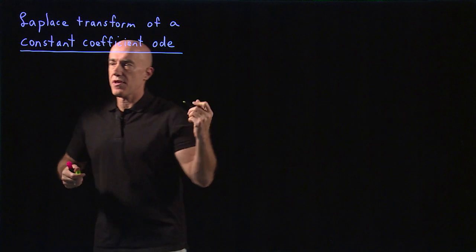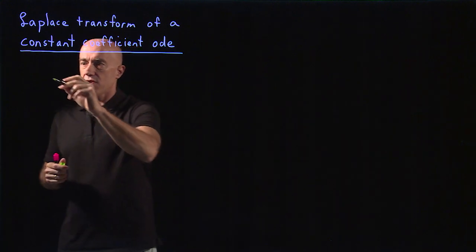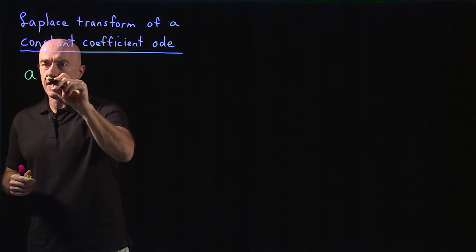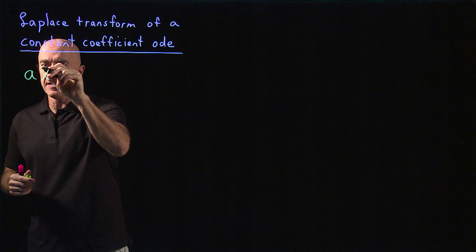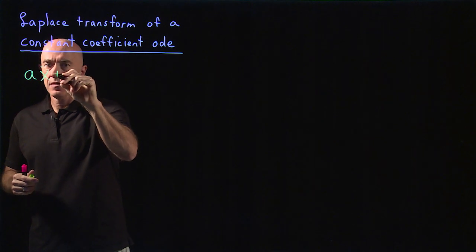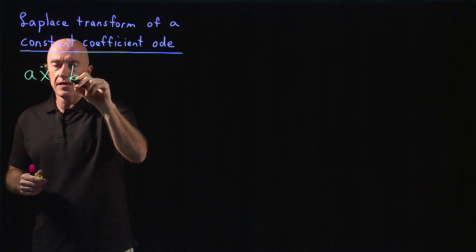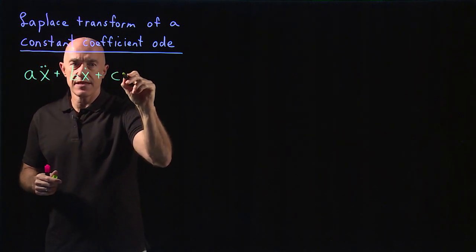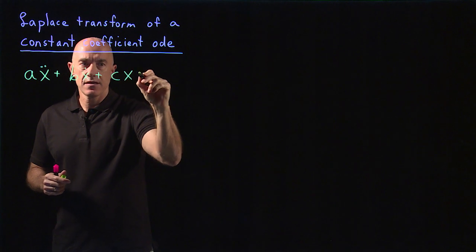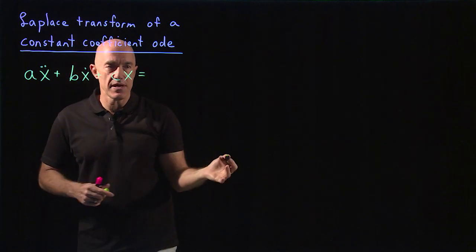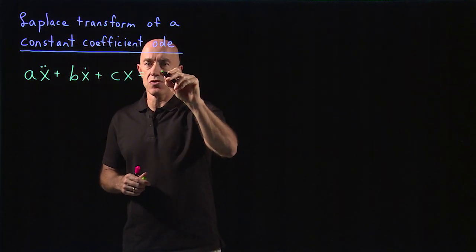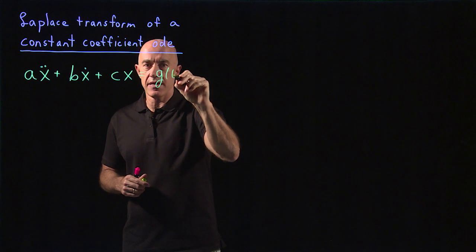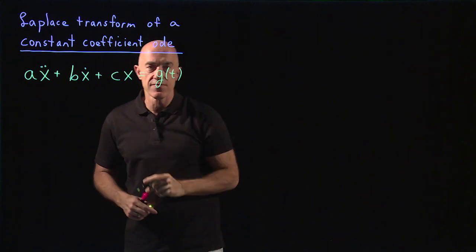We start with a second order differential equation: ax double dot plus bx dot plus cx, and there'll be an inhomogeneous term — we'll call that g — which will be a function of time.